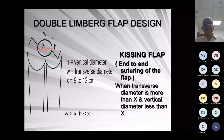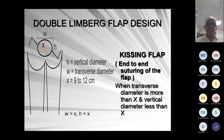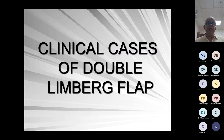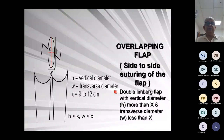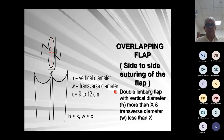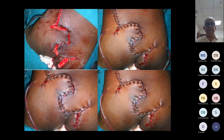Double Limberg flap has two configurations. In one, w is more than x — when the transverse diameter exceeds 9 to 12 cm but height is less. These two flaps are placed side to side, end to end; I have named this the 'kissing flap.' In another situation, w is less than x — width is less than 9 to 12 cm but height is more. In this case the flaps are positioned end to end and I have named them the 'overlapping flap.' Examples are shown: the flaps are not aligned end to end as with width because the height is more.